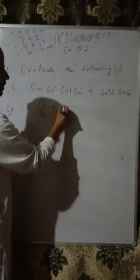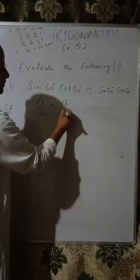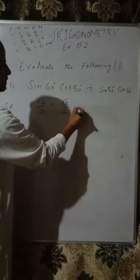Now the solution of the first part of the exercise. Sin 60 degree is equal to √3/2. Then cos 30 degree is also equal to √3/2.